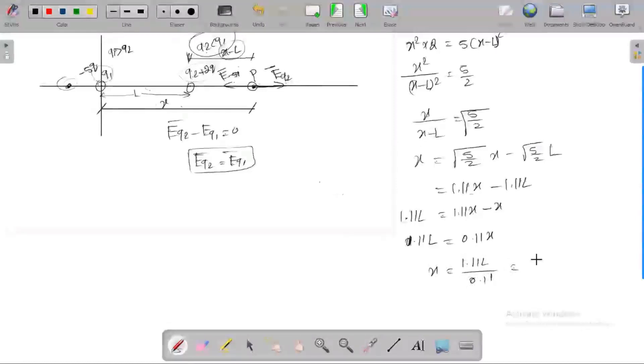1.11 divided by 0.11 equals 10.9. So x equals 10.9L.